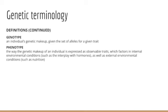A good example of phenotype being controlled by both internal and external environment is height. Height is certainly controlled by genes — there are a handful of genes in the body that contribute toward height in one way or another. But height is also determined by the effects of hormones during puberty, which is part of our internal environment, as well as by nutrition, which is an external environmental influence.